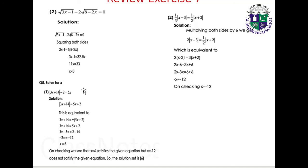Question 5: Solve |3x plus 14| minus 2 equals 5x. Rearranging: |3x plus 14| equals 5x plus 2. This is equivalent to 3x plus 14 equals 5x plus 2 or 3x plus 14 equals minus(5x plus 2). First: 3x minus 5x equals 2 minus 14, giving minus 2x equals minus 12, so x equals 6. On checking, x equals 6 satisfies the equation but x equals 12 does not. Solution set: {6}.